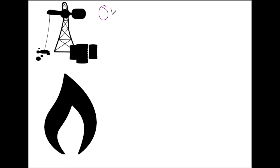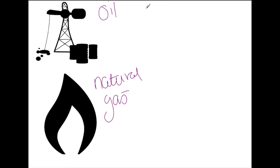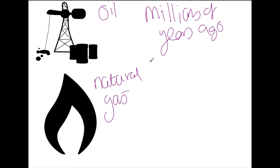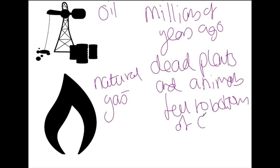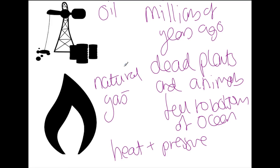The other fossil fuels we have are oil and natural gas, which are often found together. Both oil and natural gas also formed millions of years ago, when dead animals and dead plants from the sea fell to the bottom of the ocean. There they were covered with layers and layers of sediment, and then again through heat and pressure the fossils that formed were turned into oil and natural gas.